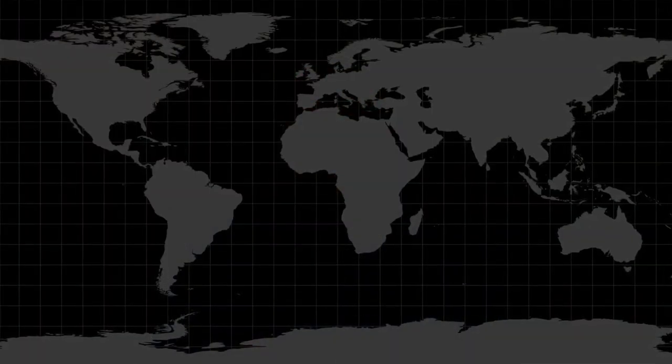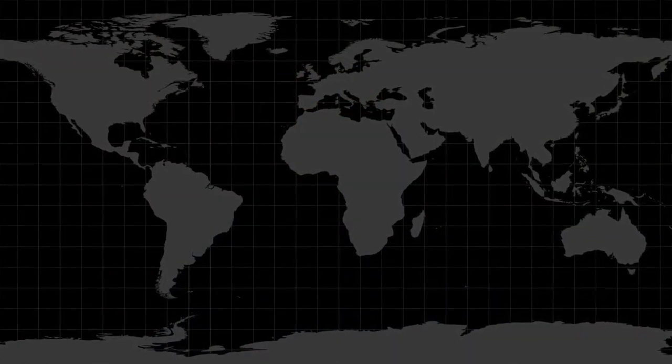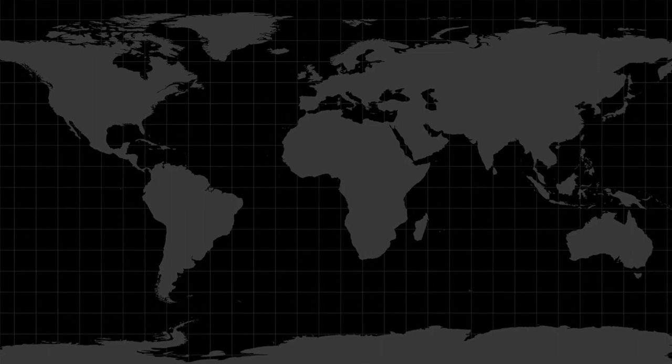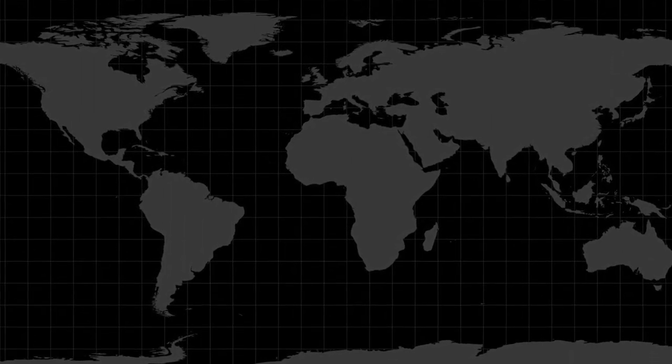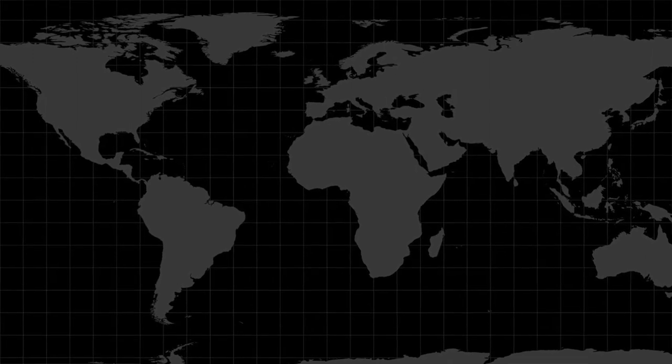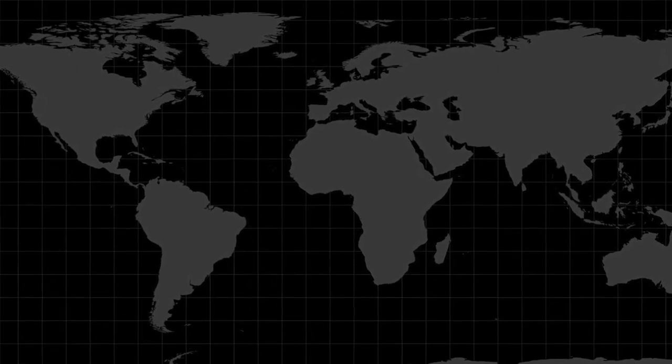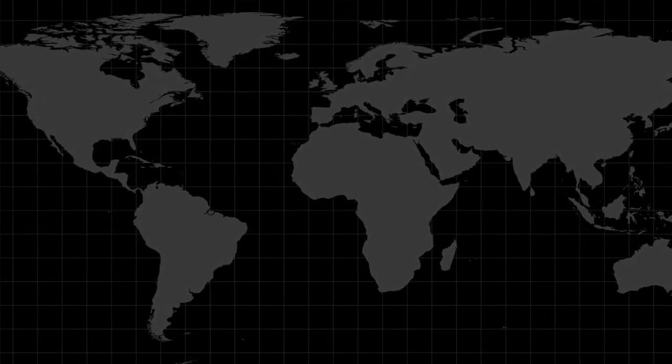There are lots of map projections out there. The projection is the algorithm that describes how we're going to present this curved surface on a flat surface. This map is the Mercator projection — projections tend to be named after the cartographer that developed them. The Mercator projection is really common and you might feel that this map is quite familiar, but it does distort the Earth in certain ways.